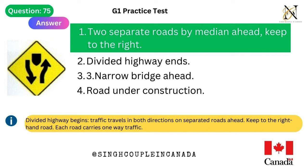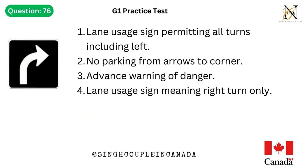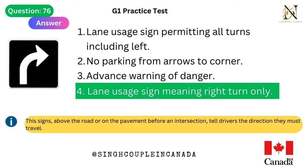Question 76. This traffic sign means: 1. Lane usage sign permitting all turns including left. 2. No parking from arrows to corner. 3. Advance warning of danger. 4. Lane usage sign meaning right turn only. Answer is 4. Lane usage sign meaning right turn only. This sign, above the road or on the pavement before an intersection, tells drivers the direction they must travel.